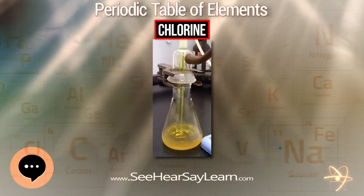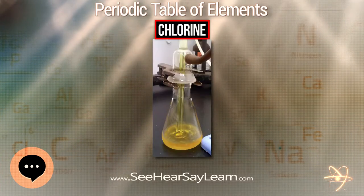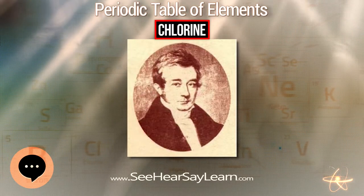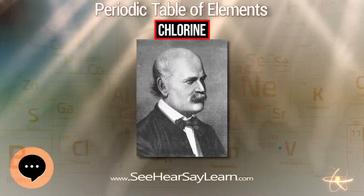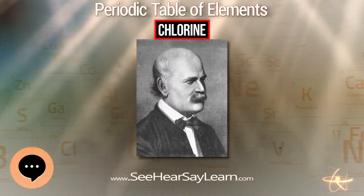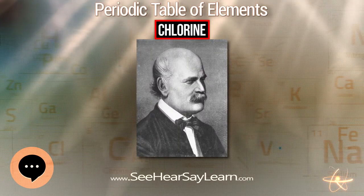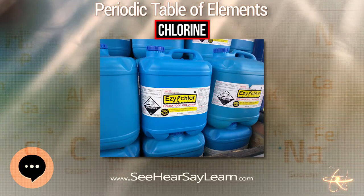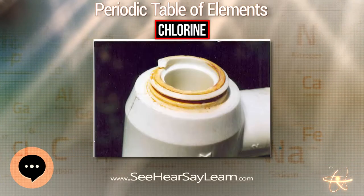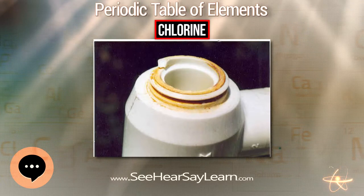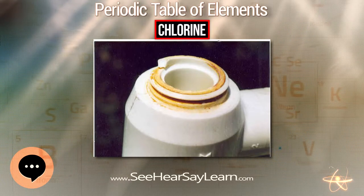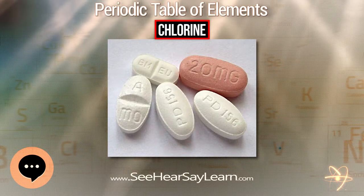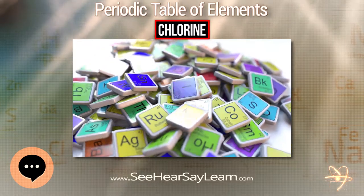This can be seen from the standard electrode potentials of the X₂/X⁻ couples. However, this trend is not shown in the bond energies because fluorine is singular due to its small size, low polarizability, and lack of low-lying d orbitals available for bonding. As another difference, chlorine has a significant chemistry in positive oxidation states while fluorine does not. Chlorination often leads to higher oxidation states than bromination or iodination but lower oxidation states than fluorination. Chlorine tends to react with compounds including M–M, M–H, or M–C bonds to form M–Cl bonds.